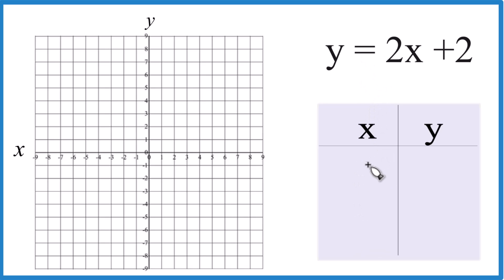You can put any values in for x. I like to use 0 first, though, because 2 times 0, that's 0 plus 2. So just 2, y equals 2.